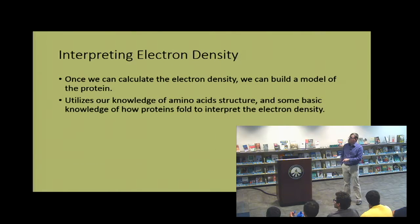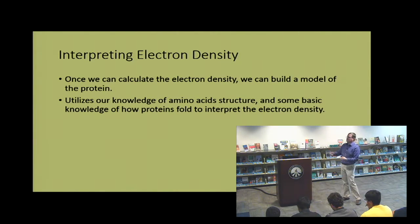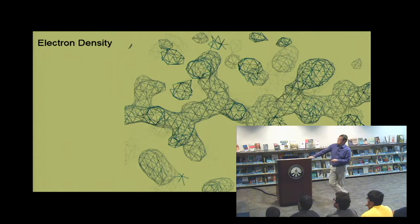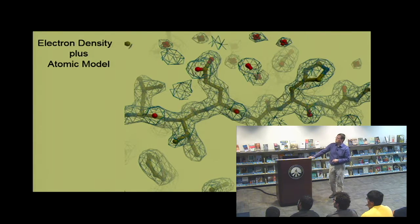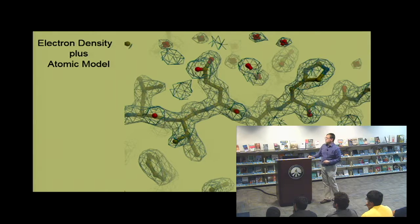Once we calculate the electron density map, we can build up our model of the protein. The crystallographer sits down at their computer and uses a graphics program to put together the model like a jigsaw puzzle, fitting it into the electron density. We utilize our knowledge of basic amino acid structure and protein structure to interpret it correctly. This is a small section of electron density from a protein I've worked on — you can see little spheres of higher density where the atoms will be placed, and we build in an atomic model. With this atomic model I can then examine how proteins fold, what chemistry enzymes carry out, how they function as transporters, and more.